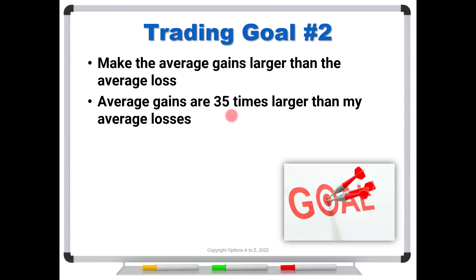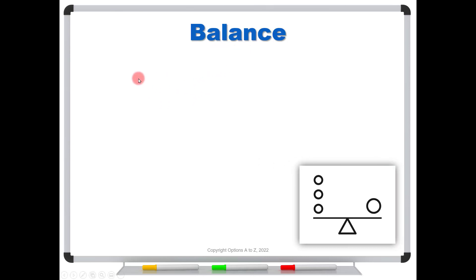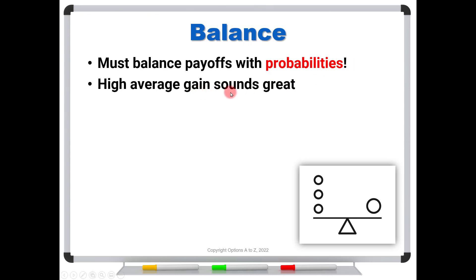Why? Because it's about balance. In this case, you must balance the payoffs with the probabilities. See here, you're focused on the payoffs. I want 35 times more on the trades that I win compared to the ones where I lose. But we've got to balance that with the probabilities. So sure, a high average gain sounds great. However, if these high average gains are combined with unfair probabilities, it's going to lead to losses. It's always about balancing the payoffs with the probabilities.